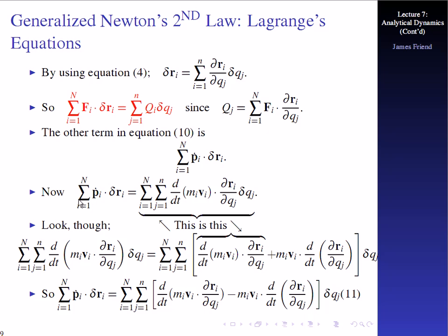If we do what we just said, then this p-dot sub i delta r sub i, summation from 1 to N over i, is actually equal to the summation of i from 1 to cap N, and j from 1 to lowercase n, of the whole part: the time derivative of m_i v_i dot delta r sub i, partial r sub i with respect to q sub j, then we subtract off this part — m_i v_i dot the time derivative of partial r sub i with respect to q sub j — and then we have delta q sub a. This is equation 11.